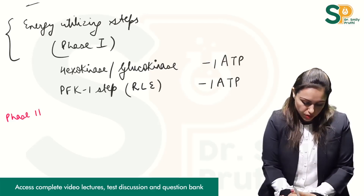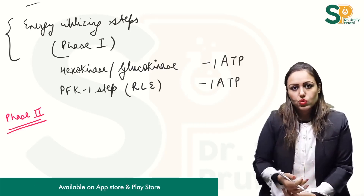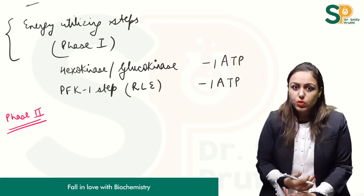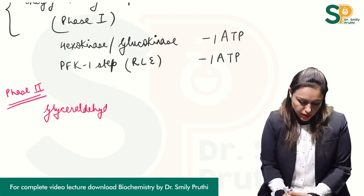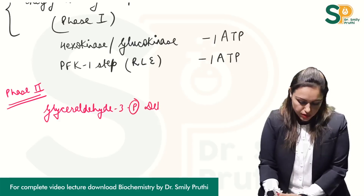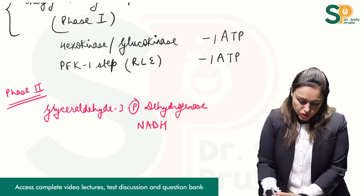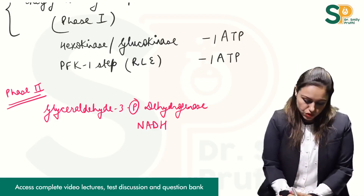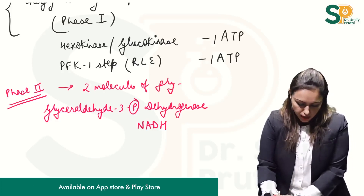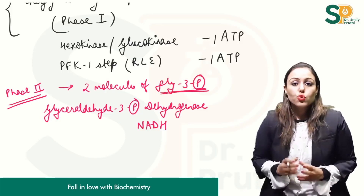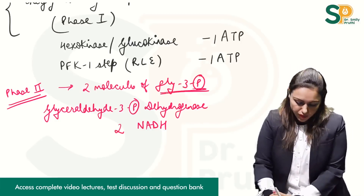Now coming to phase two of glycolysis — phase two is the energy producing phase. There are three steps in phase two which are producing energy. One step is the glyceraldehyde-3-phosphate dehydrogenase enzyme step, which is producing NADH. Phase two starts with two molecules of glyceraldehyde-3-phosphate, so all the energetics in phase two is multiplied by 2. So I will write it as 2 NADH.